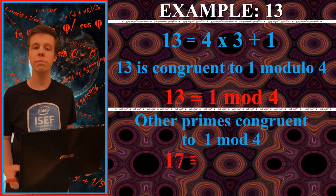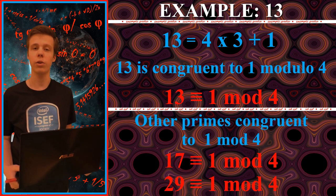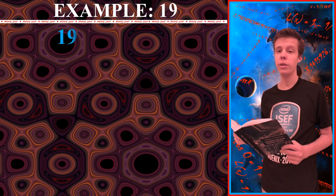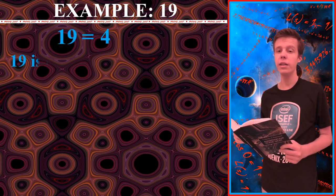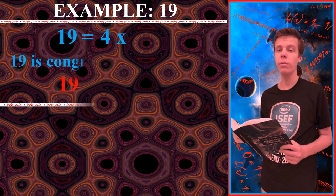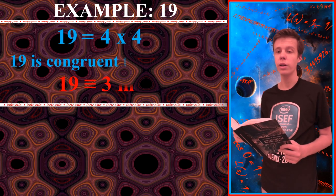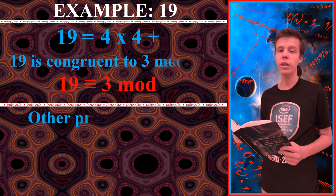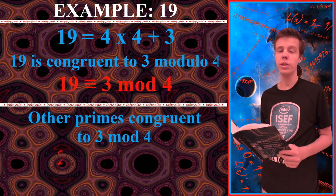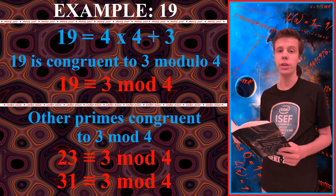They even have a special notation for this fact. Now take another prime number, 19. 19 is congruent to 3 modulo 4. Therefore, 19 is very different from 13.